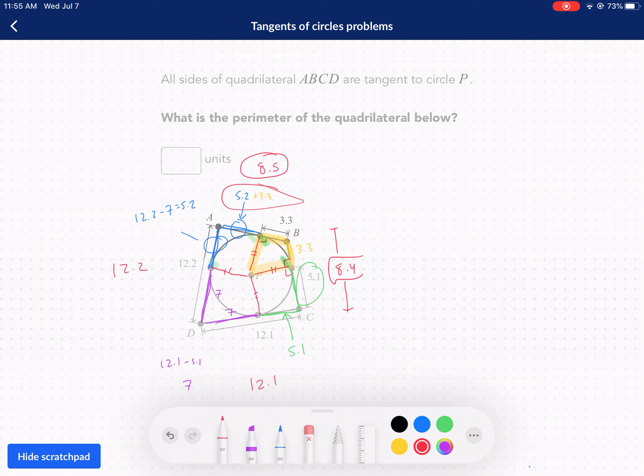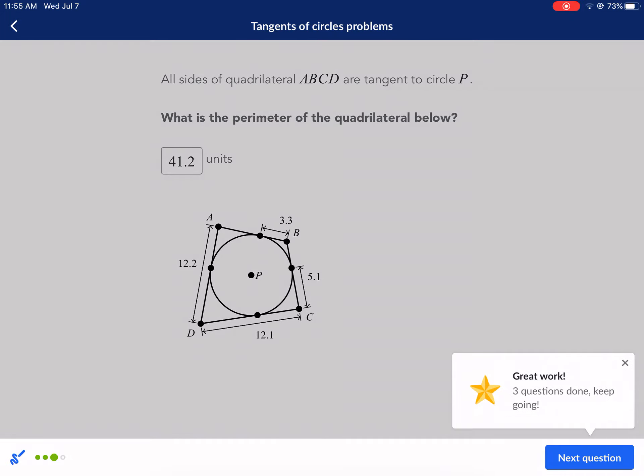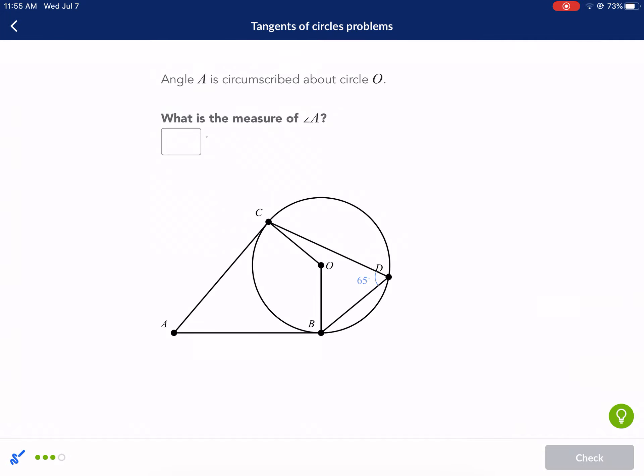So now we have our final distances: 8.5, 8.4, 12.1, and 12.2. So I don't have a calculator on me, so we're just going to have to do this old school. So we have 12.2 plus 12.1. That's going to give us 24.3. We're going to add 8.4 to that, and we're going to get 32.7. And then we have 8.5 to that. That takes us to 41.2. Hopefully I did that right. Otherwise this might be embarrassing. 41.2. Let's check it out. Got it. Woo! Close call. All right.